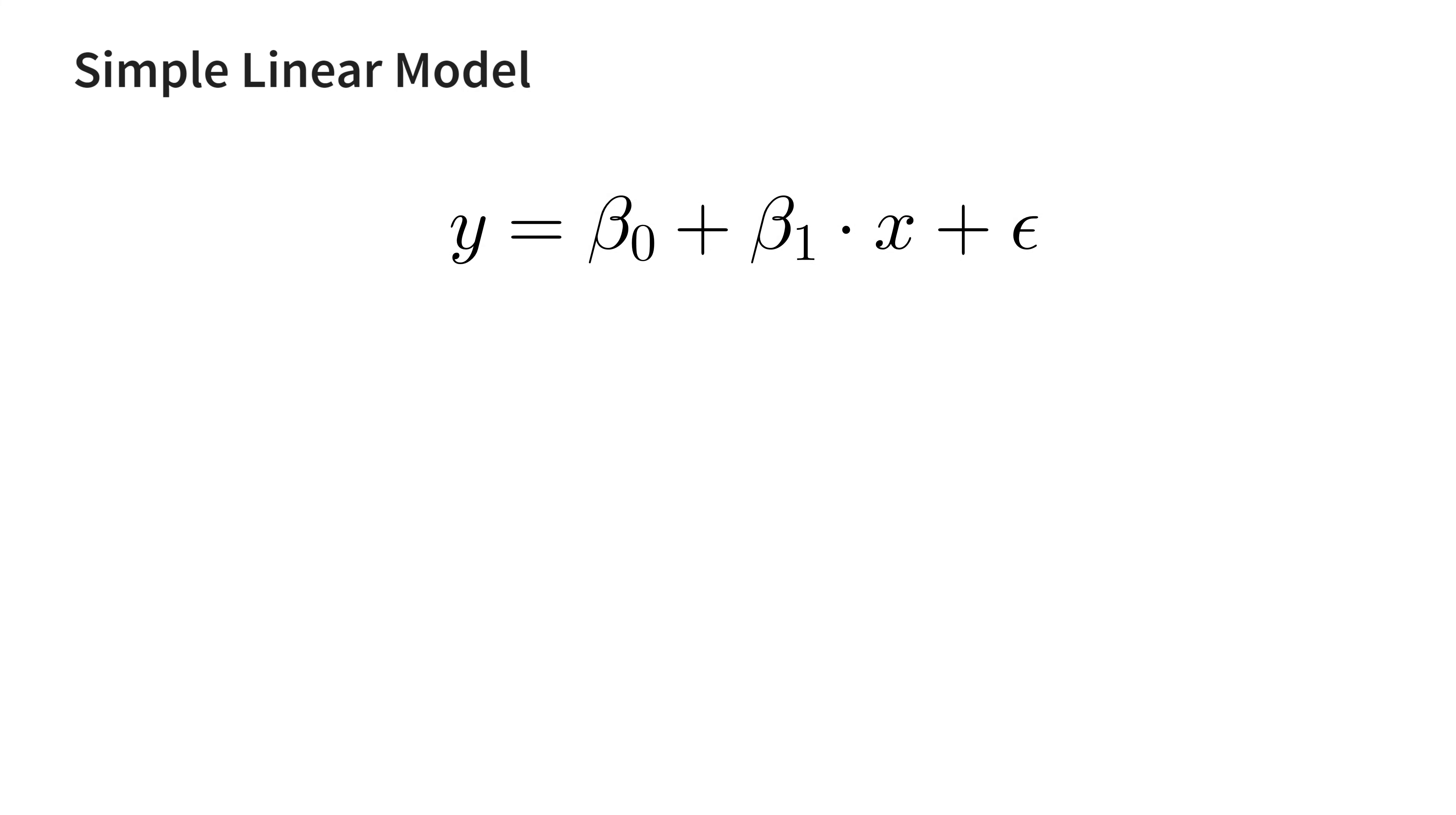Our full model then looks like this. The outcome equals the regression line plus some error. If you want to draw conclusions about the estimated relationship, this error is actually very important. We make several key assumptions about it that are required for correct inference.